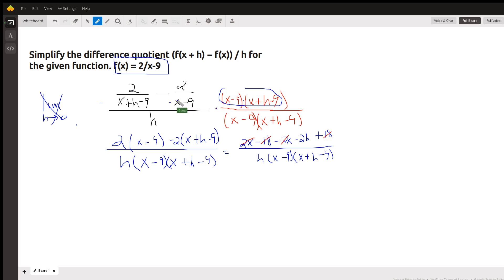We have minus two times the remaining factor because the x minus nine's cancel out. We have minus two times the quantity x plus h minus nine, and of course we have to multiply the denominator by the same expression.